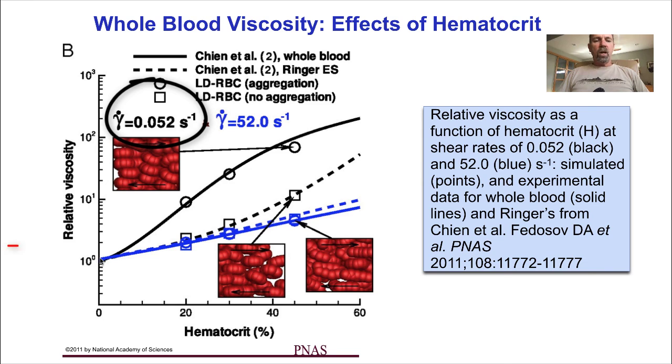However, as the hematocrit increases, the viscosity rises, but it rises more at lower shear rates than it does at higher shear rate. So the shear thinning behavior of whole blood is seen by the difference between the relative viscosity at 0.052 per second versus 52 per second, is dependent on the presence of the red blood cells. And the more red blood cells, the more shear thinning behavior we see.